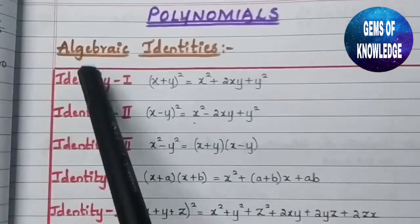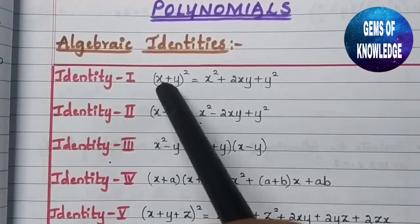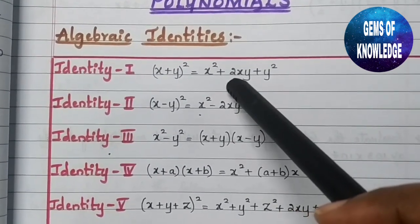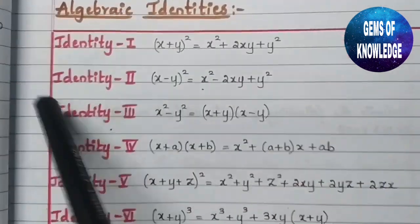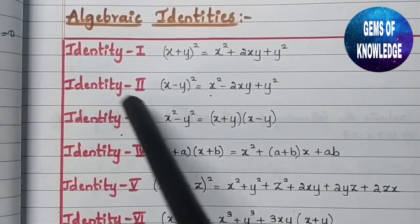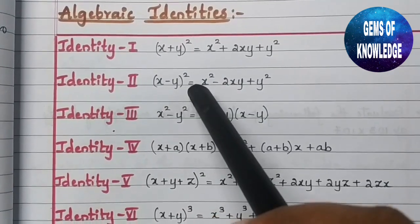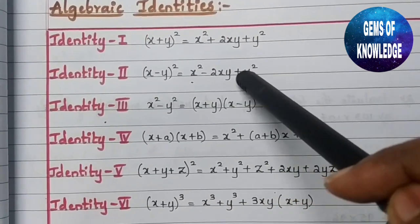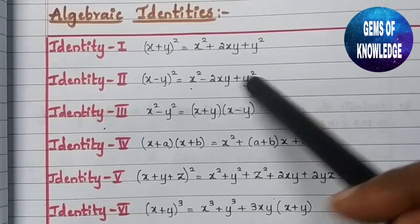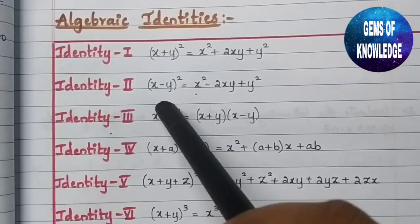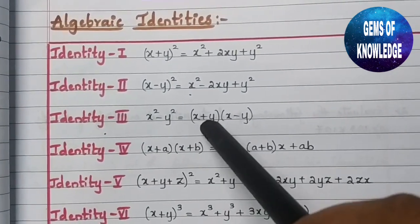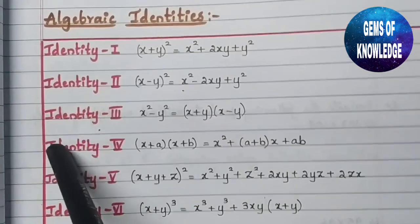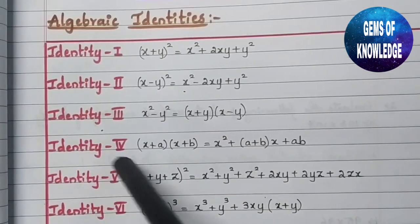The first identity is (x + y)² = x² + 2xy + y². The second identity is (x - y)² = x² - 2xy + y². The third identity is x² - y² = (x + y)(x - y).